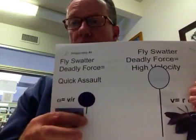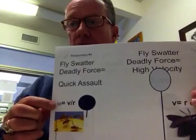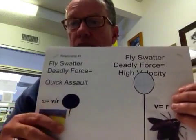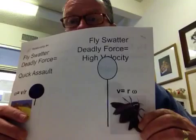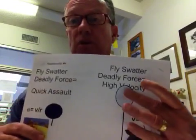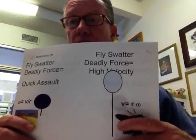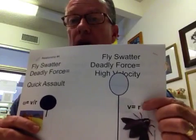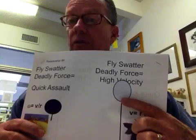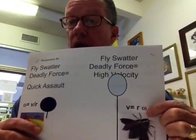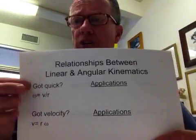I can use a short fly swatter because I can be quicker with it. But if I've got a real monster of a bug to kill, I need something with greater killing force, which means a longer lever. The emphasis then is on big velocity with a longer lever. I'd like you to think about, for class, applications of these two interplays — linear and angular — in the world in which you work.